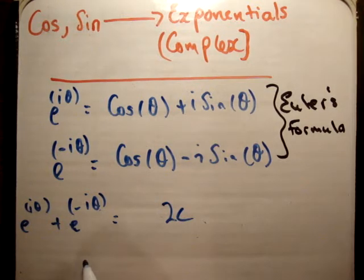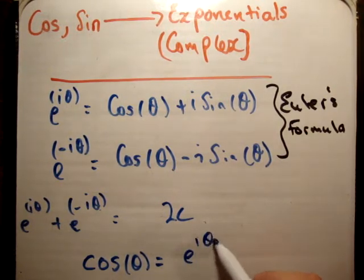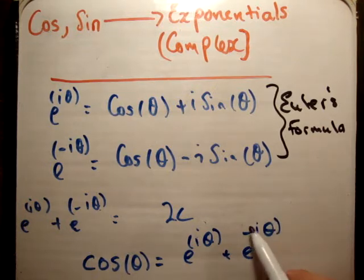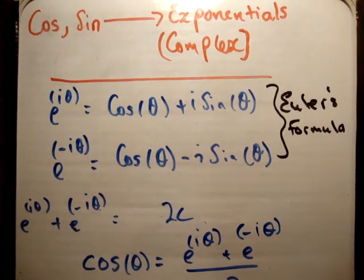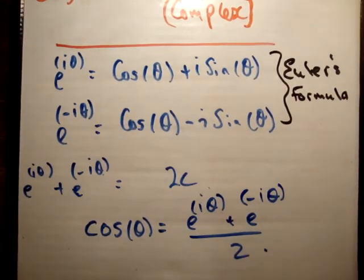We're now going to get 2 times cos(θ). So what we can now say is that cos(θ) is equal to [e^(iθ) + e^(-iθ)] / 2. Now we have cos(θ) in terms of complex exponentials.